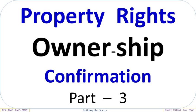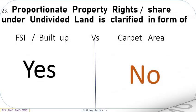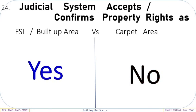Property Rights Ownership Confirmation — Part 3. Property ownership rights are as per FSI Built-Up: Yes, vs Carpet Area: No. Proportionate property rights and share under undivided land are clarified in the form of FSI Built-Up: Yes, vs Carpet Area: No. The judicial system accepts and confirms property rights as FSI Built-Up Area: Yes, vs Carpet Area: No.